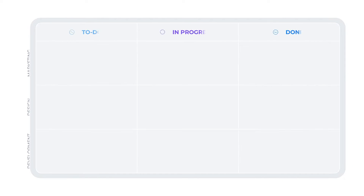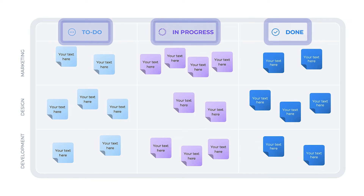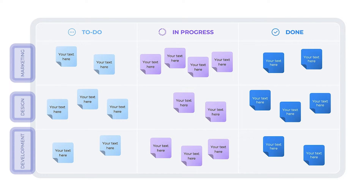For instance, Spotify implemented Kanban after they struggled to execute projects. They decided to go for a simple approach with just three sections: to do, in progress, and done. This was so team members wouldn't get overwhelmed with tasks. In this example, tasks are organized by lanes or departments instead of by individual team members.